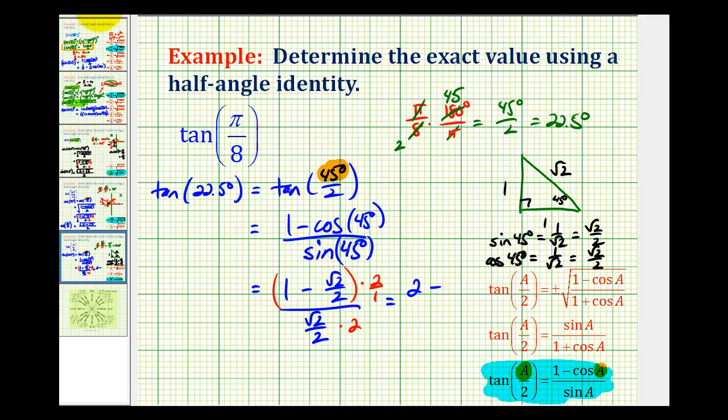So we have 2 - √2 divided by the same thing in the denominator. These twos simplify out, so we're left with √2.